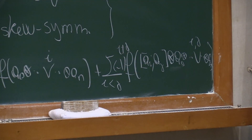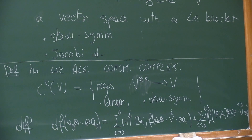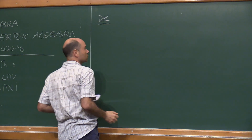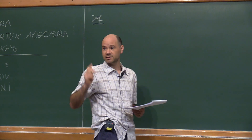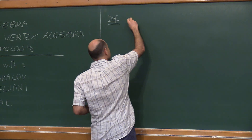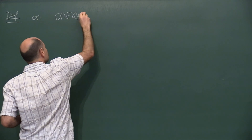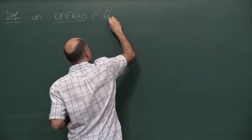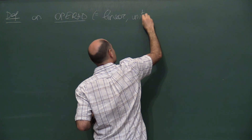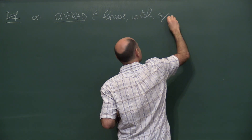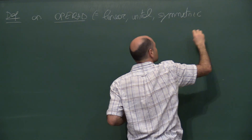Now I want to re-describe exactly this notion of Lie algebra and Lie algebra cohomology in terms of operads. Let me remind you what is an operad. By operad I will mean a linear, unital, symmetric superoperad — a notion which goes back to May in the 70s.